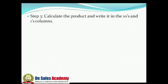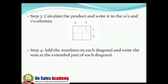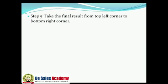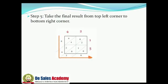Step 3: Calculate the product and write it in the tens and ones columns. Step 4: Add the numbers on each diagonal and write the sum at the extended part of each diagonal. Step 5: Take the final result from top left corner to bottom right corner.